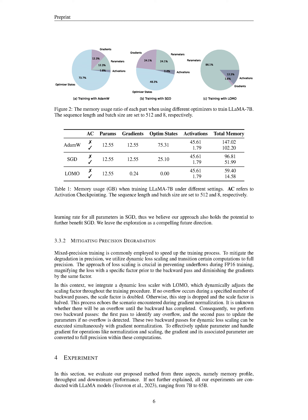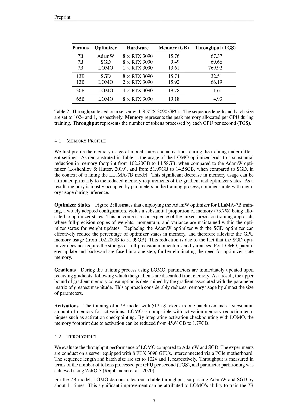In this part of our research, we focus on assessing our suggested method using three different criteria: the memory footprint, processing speed, and the overall effectiveness of the system. All our tests use LOMO models with capacities varying from 7 billion to 65 billion parameters. Based on the data shown in the table, the LOMO optimizer significantly reduces the memory footprint compared to both the AdamW and SGD optimizers — memory usage drops from 102.20 GB to 14.58 GB when switching from AdamW to LOMO, and from 51.99 GB to 14.58 GB when replacing SGD with LOMO during training of the LLaMA 7B model.